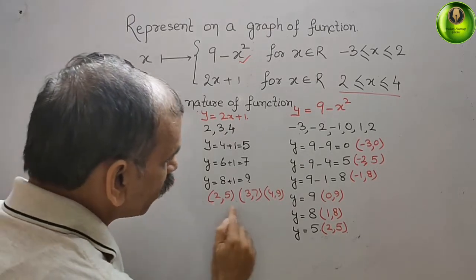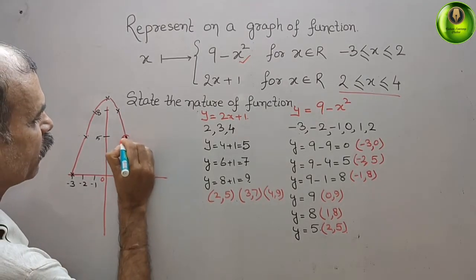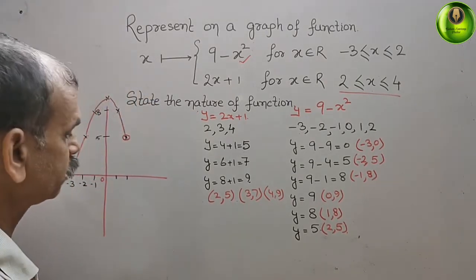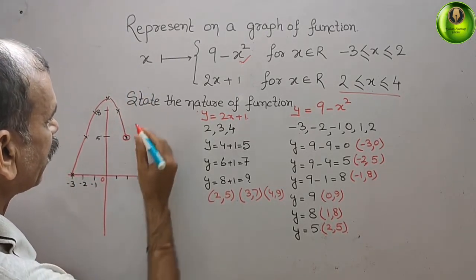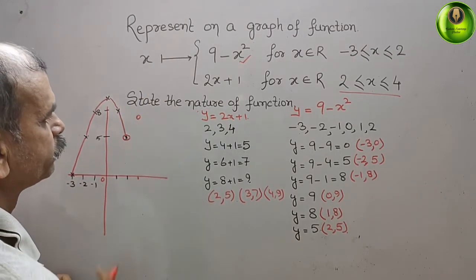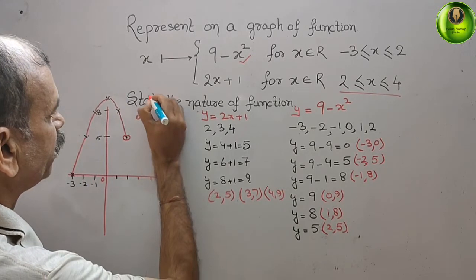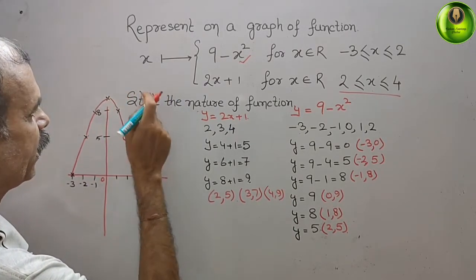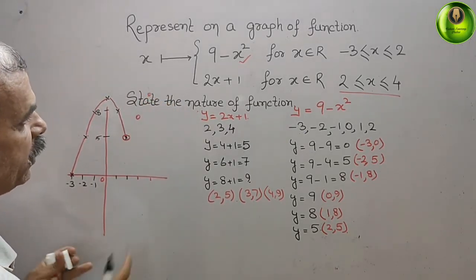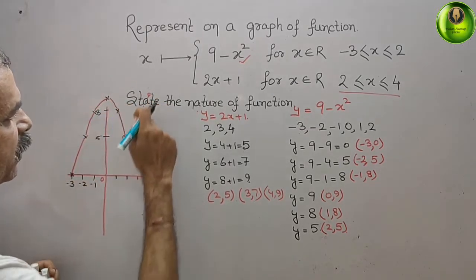Now for the second function, the point (2, 5) is here — the same position as the last point of the first function. Next (3, 7) — 3 is here and 7 is just below 8, so the point is here. Then (4, 9) — 4 is here and 9 is here. Connecting these, the graph of the second function comes like this — shown as the black dotted line.